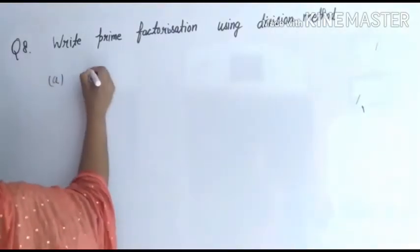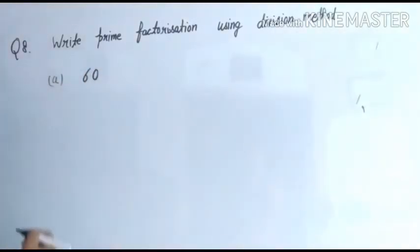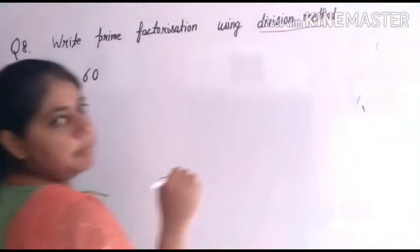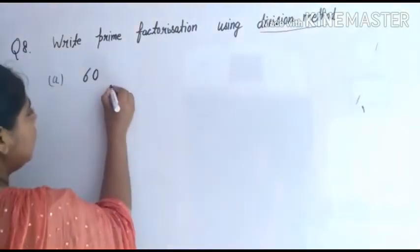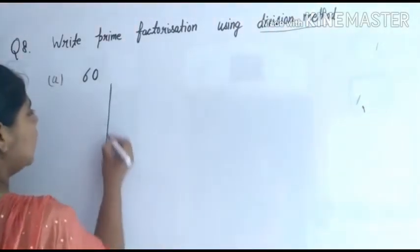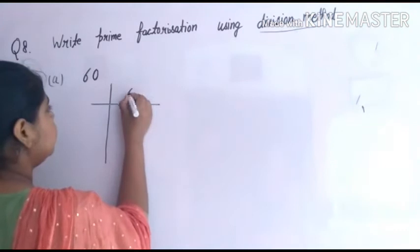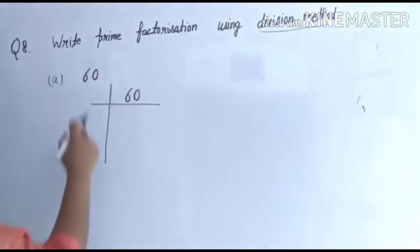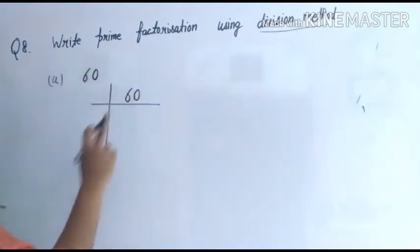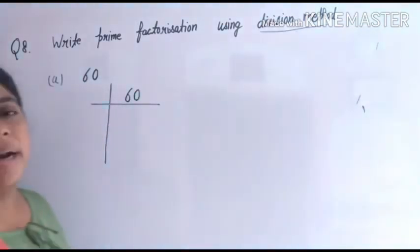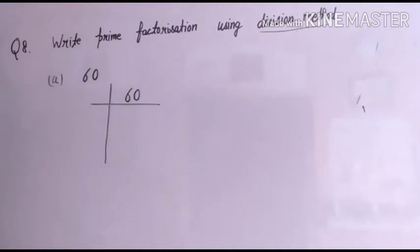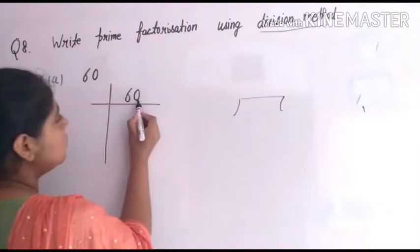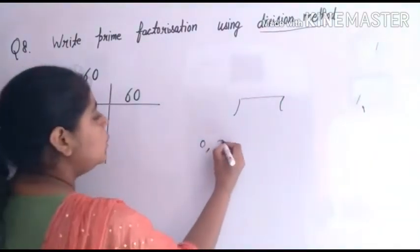It's 60. Prime factorization — which method? Division method. Let's draw the table like this. Write 60 inside it. Now, children, which smallest number is there that exactly divides 60? We have seen — if the last digit of any number is zero, two, four, six, or eight...